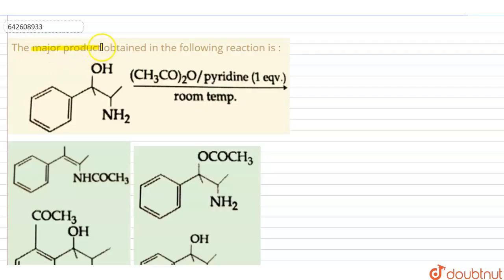The major product obtained in the following reaction is: we have a benzene ring over here and a side chain on which we have an OH group mounted and on the next carbon NH2. In the form of reagents we have CH3CO2O, that's acetic anhydride, in presence of pyridine, 1 equivalence, at room temperature.